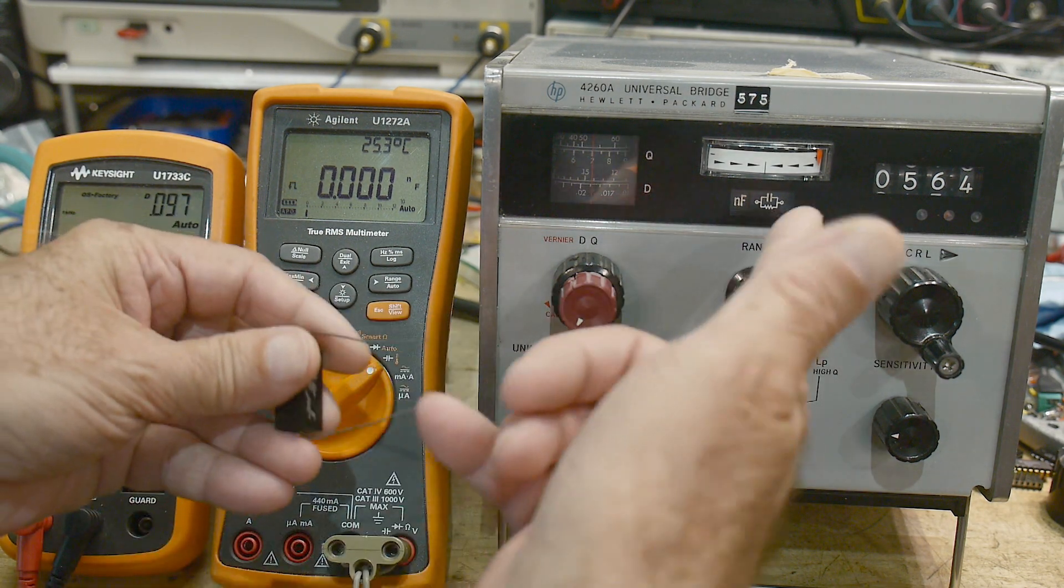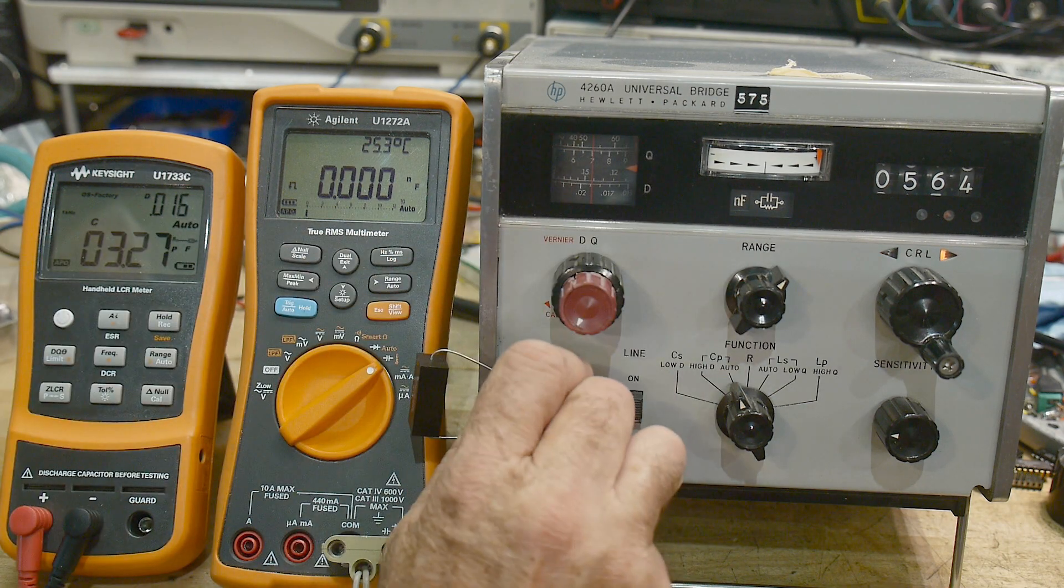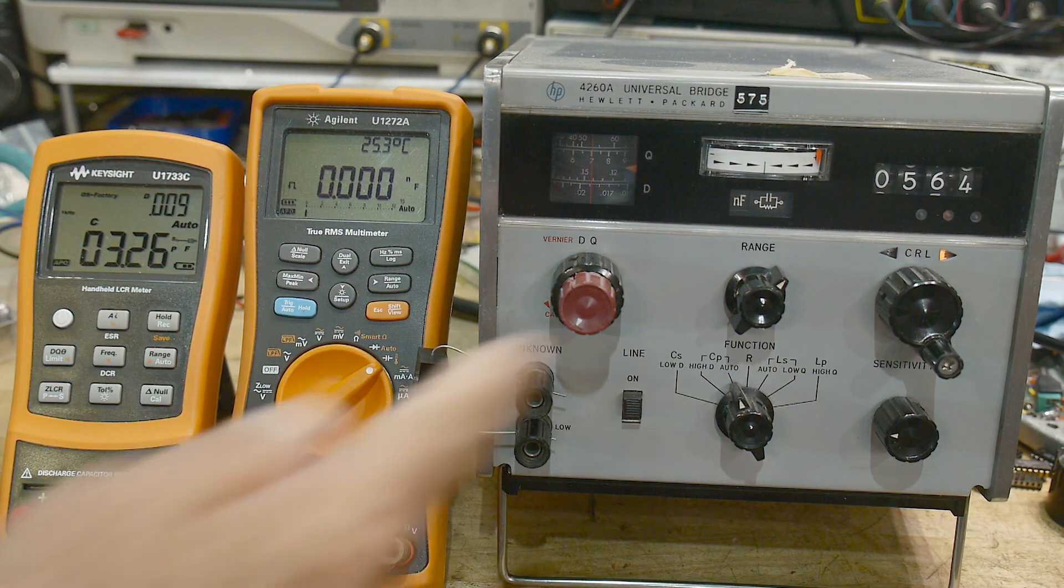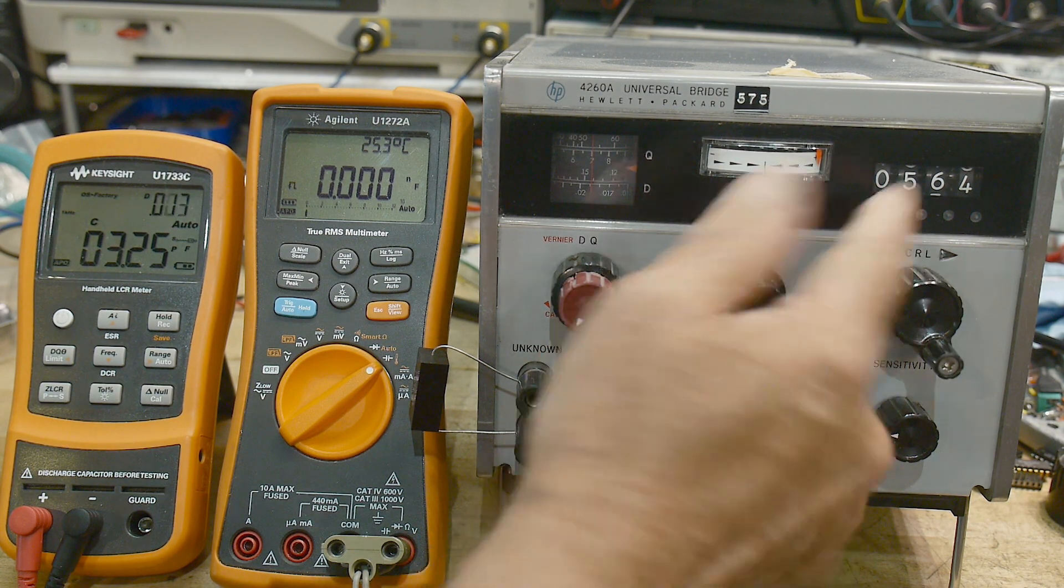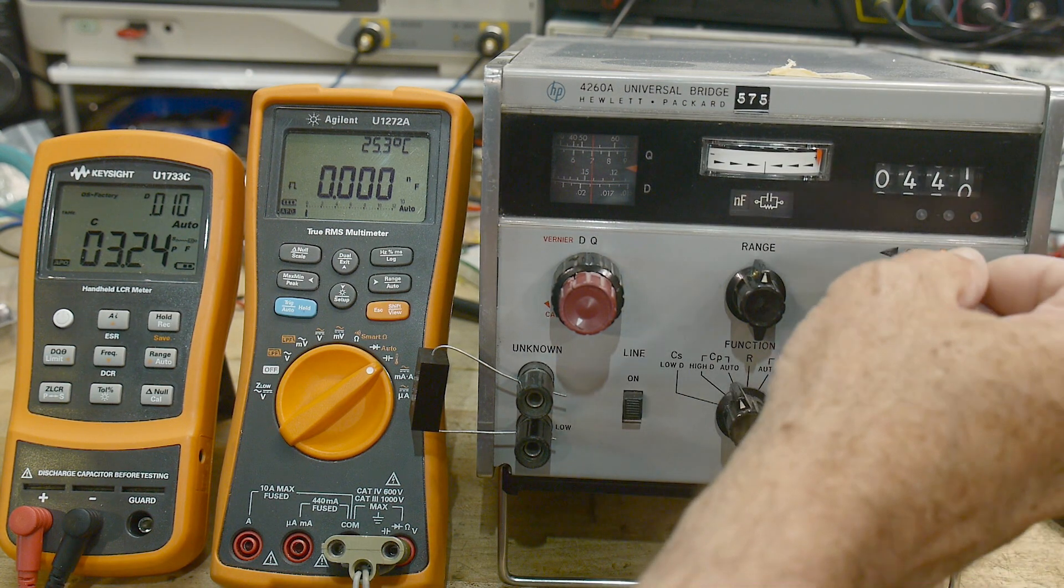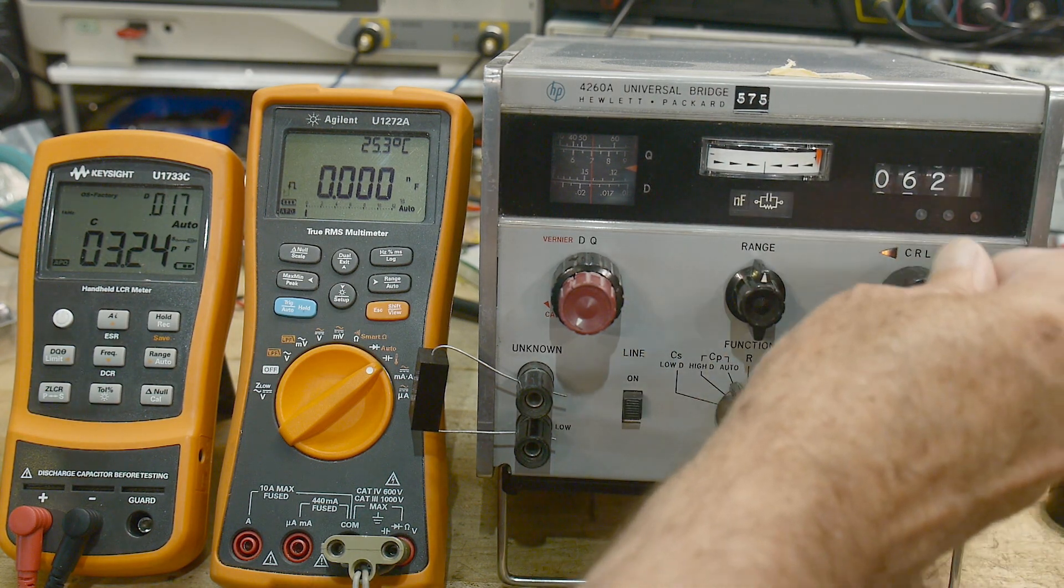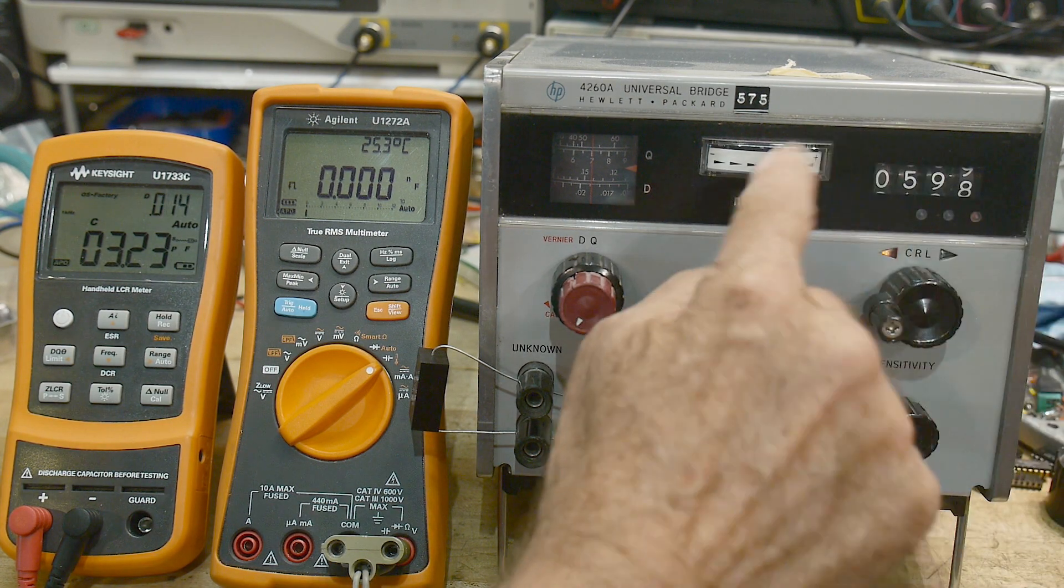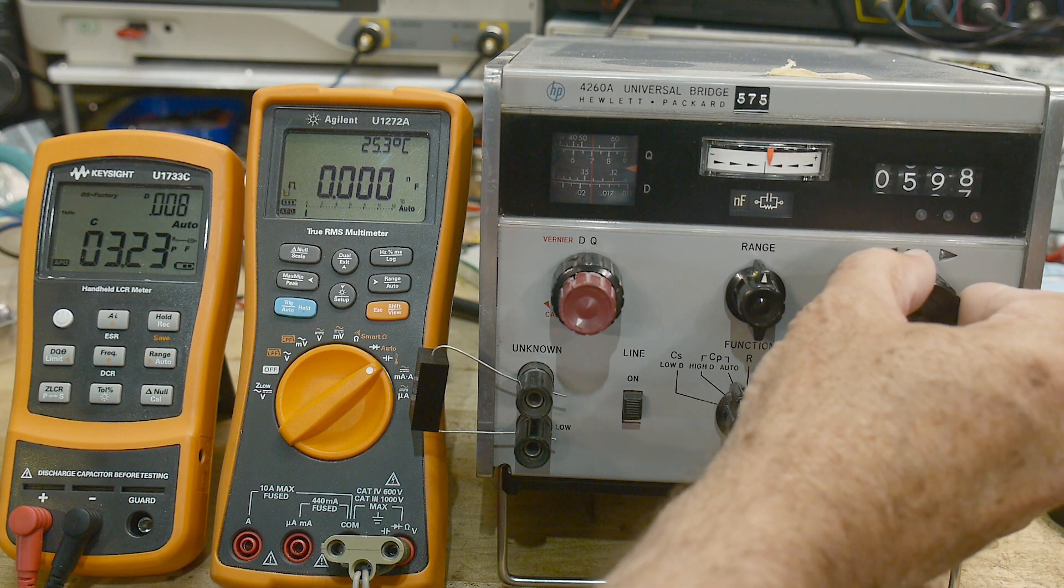And then let's measure it on this bridge here. This is an LCR bridge. I did a video on this, you can look it up. This is a 4260A. You look at that meter there and you change the range until you see that it's on that side. And then you crank the crank towards the arrow, and now it flopped. So you get it to where it flops back and forth and then you get right in there. And then you start looking at this meter and you zero it.